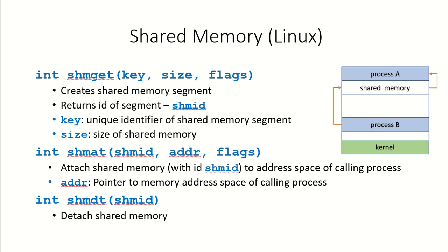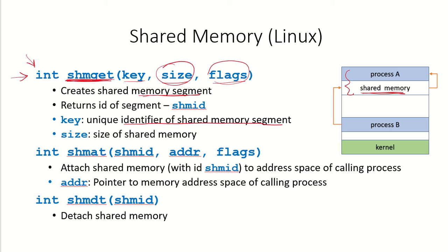In Linux, shared memory is created using a few basic commands. The first is shmget, which creates a shared memory segment. If process A wants to create shared memory in its own address space, it will use this command. There are three key parameters: key is the identifier of the memory segment, size is the size of the shared memory the process wants to create, and flags define the shared memory options. This command returns an ID referred to as the shared memory ID.